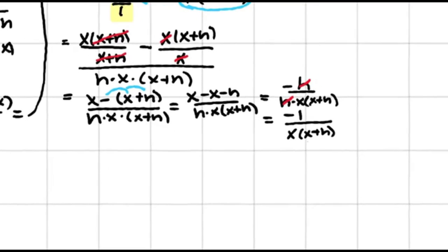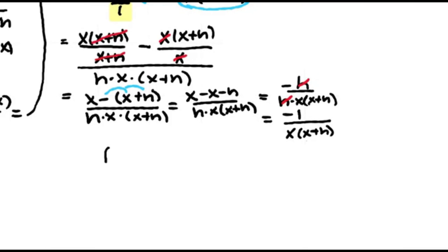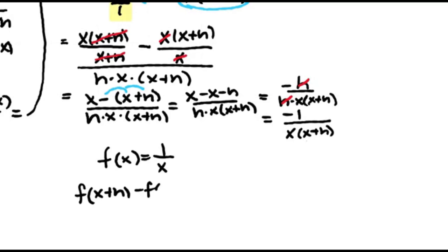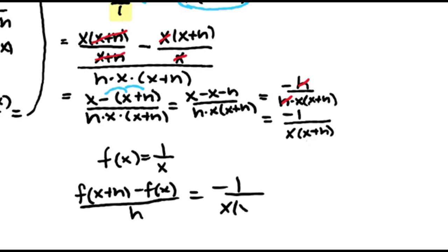So what we found is that the difference quotient for f of x equals 1 over x — that difference quotient of f of x plus h minus f of x over h — is negative 1 over x times x plus h.